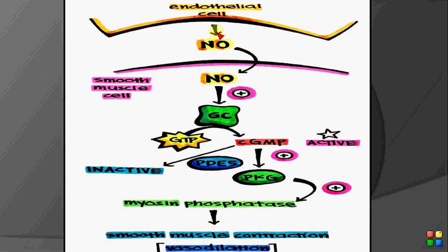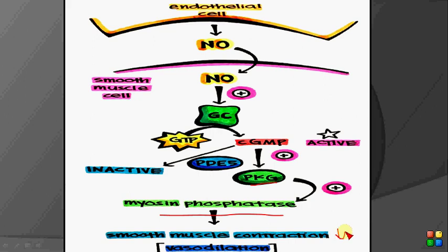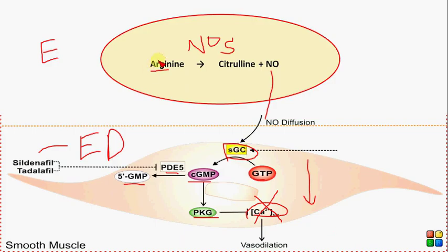Nitric oxide was synthesized in the endothelial cell, diffused into the vascular smooth muscle, and activated guanylyl cyclase, which converted GTP into cyclic GMP. Cyclic GMP activates protein kinase G, and in addition to closing calcium channels, protein kinase G also activates myosin phosphatase. Myosin phosphatase dephosphorylates the myosin light chains, and when they are dephosphorylated, smooth muscle contraction decreases and vasodilation is promoted.